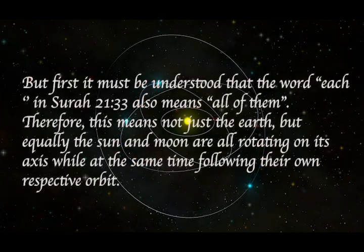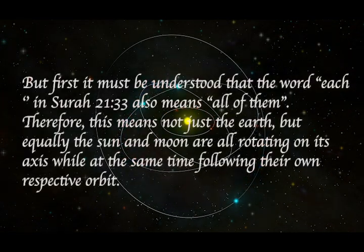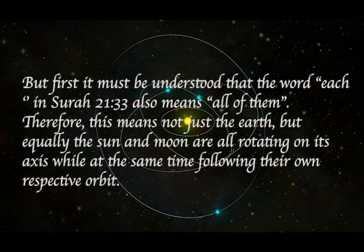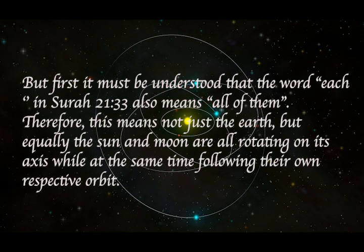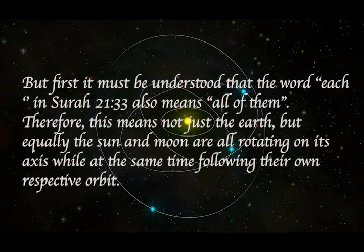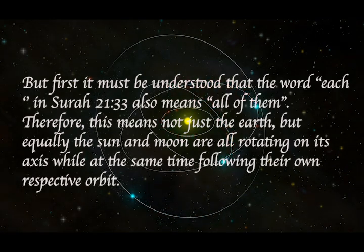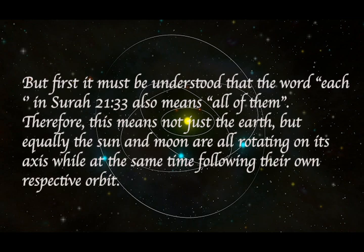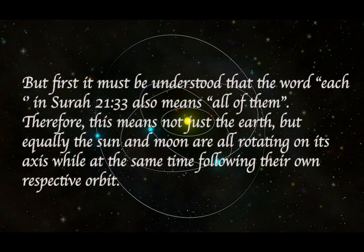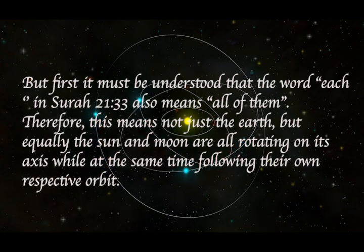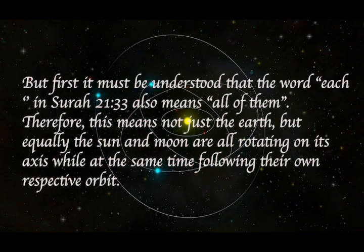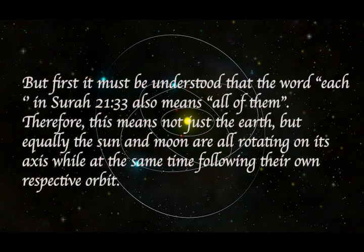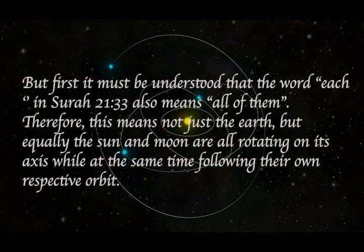It must be understood that the word 'each' in Surah 21:33 also means 'all of them.' Therefore, this means not just the Earth, but equally the Sun and Moon are all rotating on their axes, while at the same time following their own respective orbits.